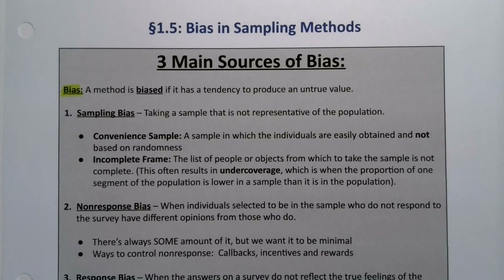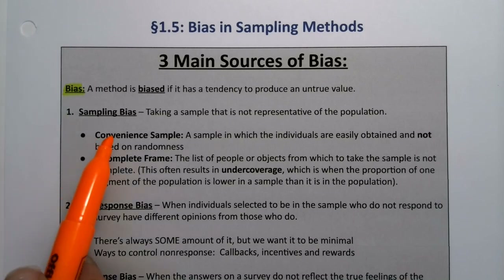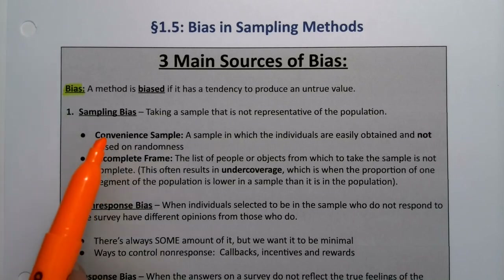In sections 1.3 and 1.4, we learned about good methods of taking samples: stratified sample, cluster sample, simple random sample, and systematic sample. But we mentioned one that was not good but is frequently used, called a convenient sample.